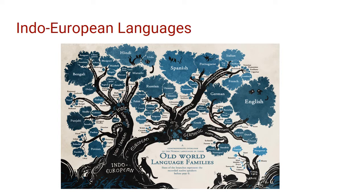The size of the foliage on this image represents the number of speakers at a certain point in this graphic novel's history, which is roughly current day. There are lots of English speakers, lots of Spanish speakers, and lots of Hindi speakers. What's interesting is that English is a Germanic language, which is funny because we don't really think of English and German as being mutually intelligible.